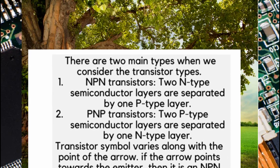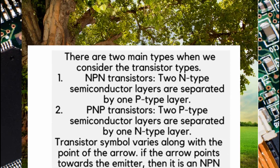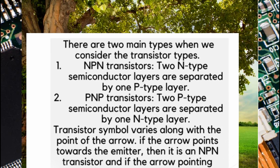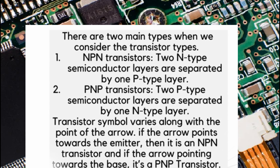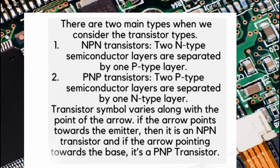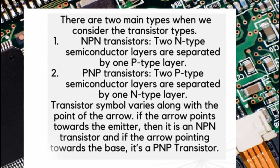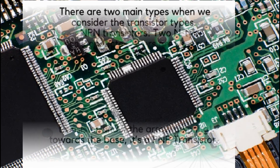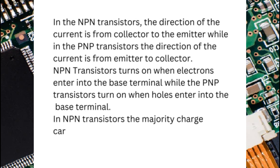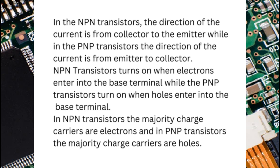Transistor symbol varies along with the direction of the arrow. If the arrow points towards the emitter, then it is an NPN transistor, and if the arrow points towards the base, it's a PNP transistor. In NPN transistors, the direction of current is from collector to emitter, while in PNP transistors the direction of current is from emitter to collector.